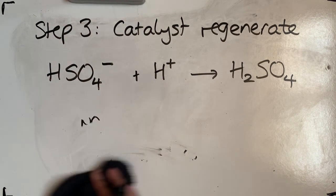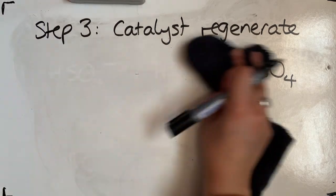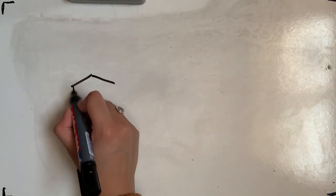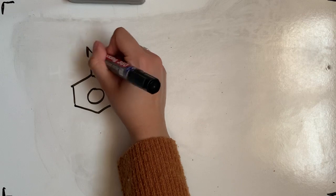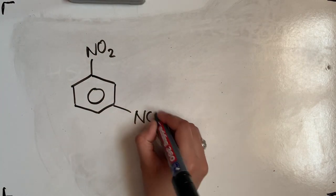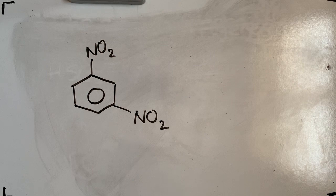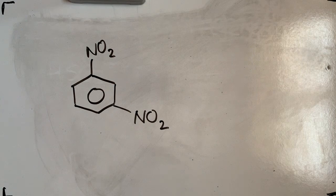Also bear in mind: if this reaction is done above 50 degrees Celsius, the nitrobenzene that forms can undergo another substitution, and it can keep going at high temperatures. To control how many times substitution occurs, we control the temperature. It should be done at 50 degrees Celsius to ensure mono-substitution, not di-substitution or tri-substitution.